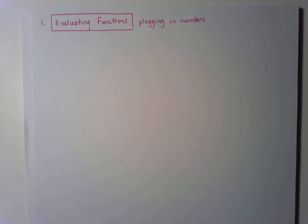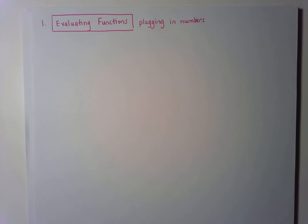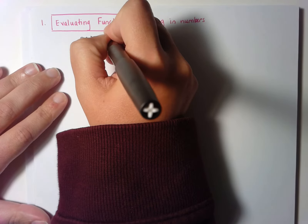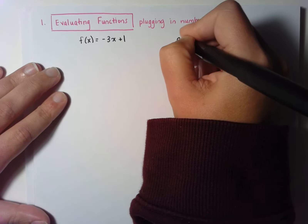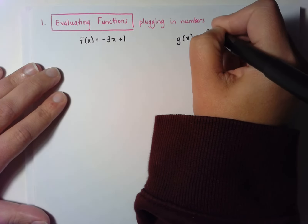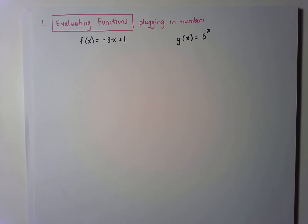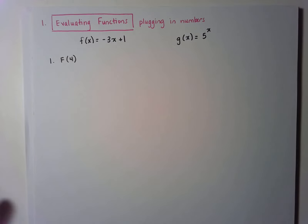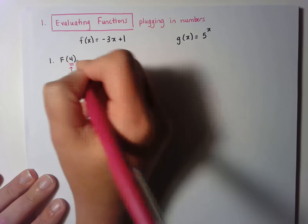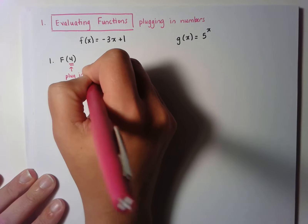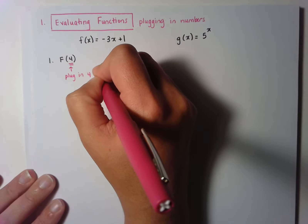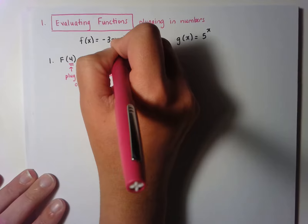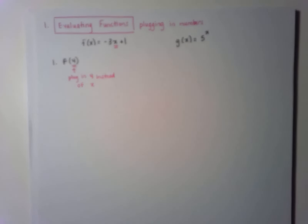An example of these types of problems would be a problem like this. Let's say that I tell you that you have two equations: f of x is equal to negative 3x plus 1, and g of x is equal to 5 to the x power. An example problem would be if I say find f of 4. Now if I say find f of 4, what this means — because the 4 is on the inside of the parentheses — is that you need to plug in 4 in the equation instead of x.